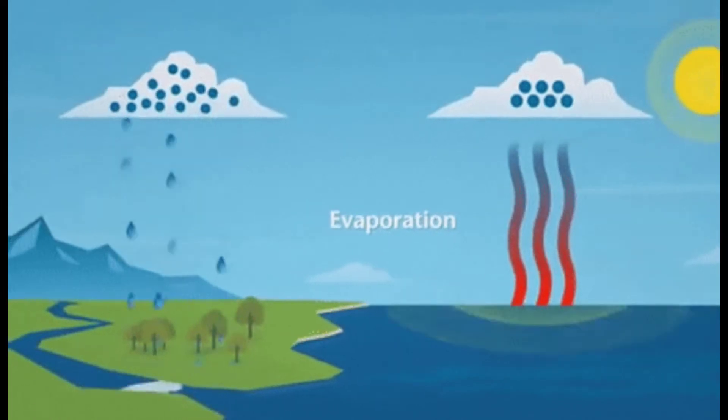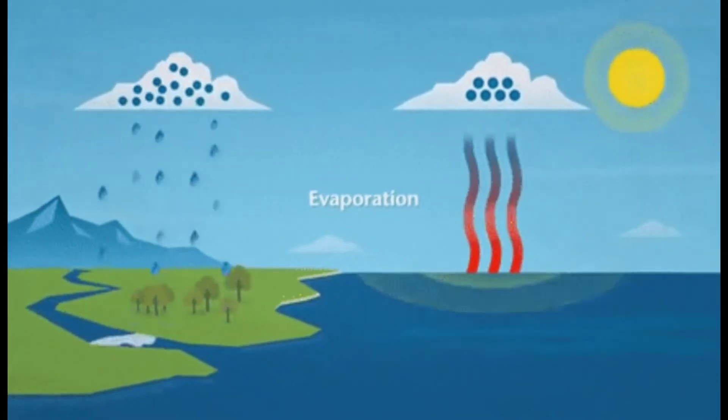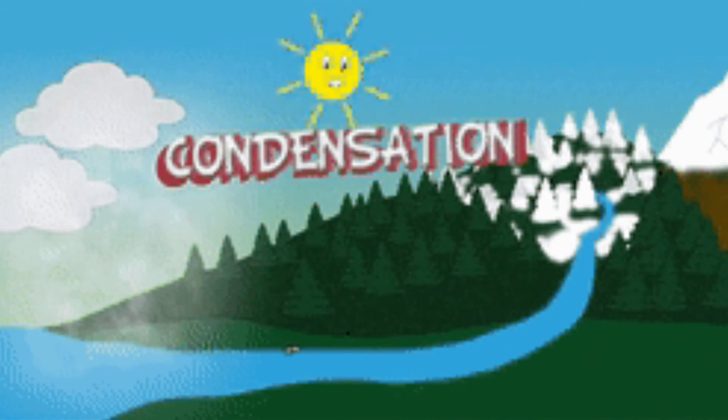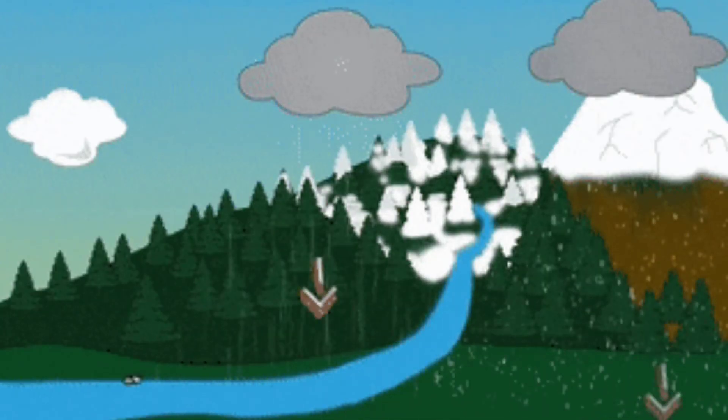Water vapor rises in the air. Water vapor cools down to form small drops of water. These drops of water join together to form clouds.